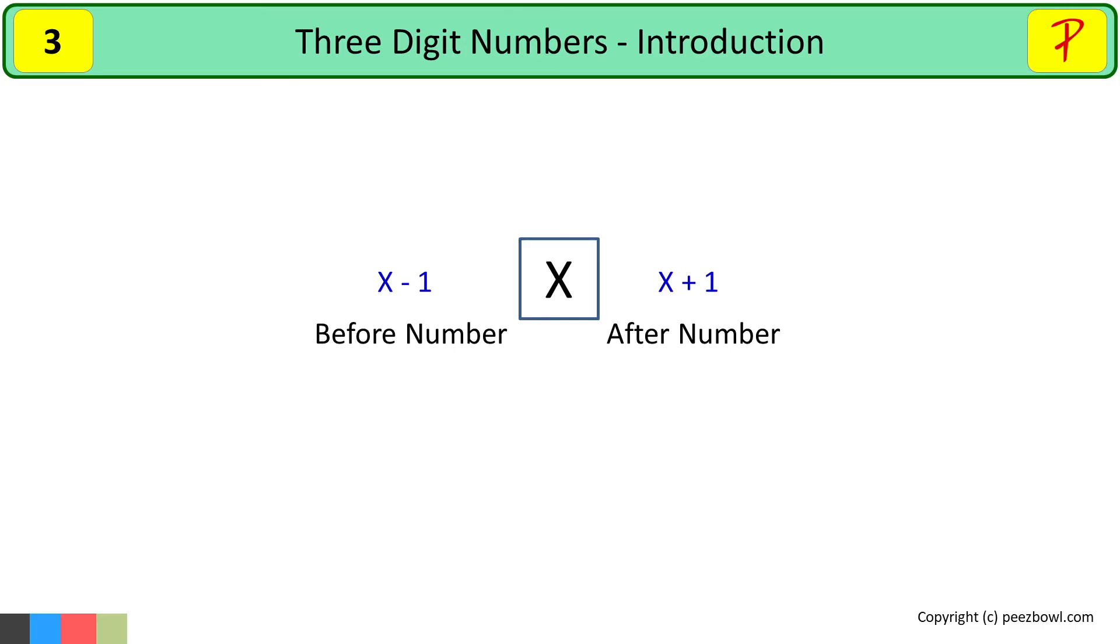Let us also bring a number line. You need to travel in the right direction to get the after numbers. And you need to travel in the left direction to get the before numbers.